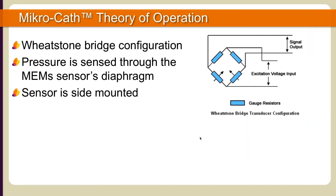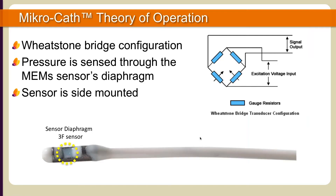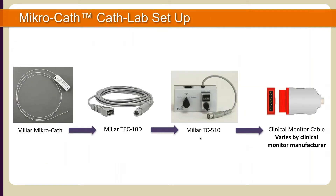The Microcath is designed using a Wheatstone bridge configuration containing a pressure-sensitive membrane known as a sensor diaphragm. The diaphragm is side-mounted on the distal sensor case. The sensor measures the summation of the mechanical pressure that impinges on the diaphragm and converts that to a voltage signal, which can be calibrated to a known value of millimeters of mercury.